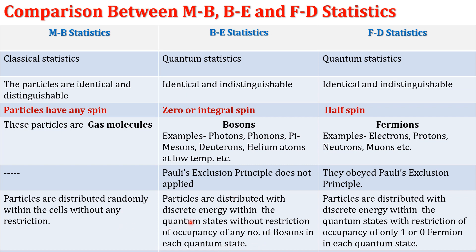In Bose-Einstein statistic, instead of cells we consider energy levels, and in each energy level there are a number of quantum states. Hence the energy is distributed within these quantum states, but there is no restriction on the number of bosons occupying each quantum state. While in Fermi-Dirac statistic, which is also a quantum statistic, the particles are distributed with discrete energy within the quantum states, but the occupancy is restricted — these particles are either 1 or 0 in each quantum state.